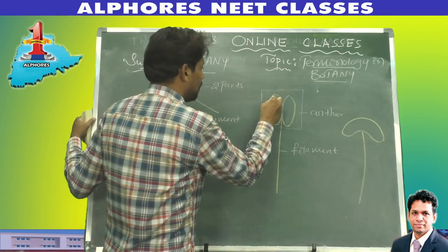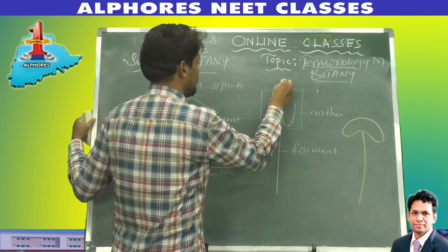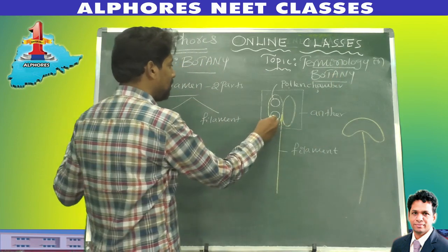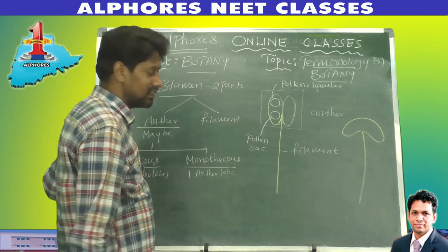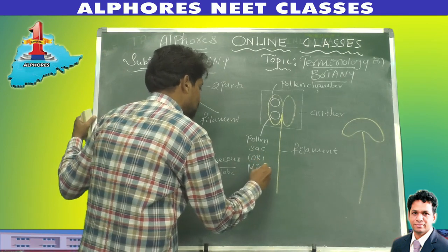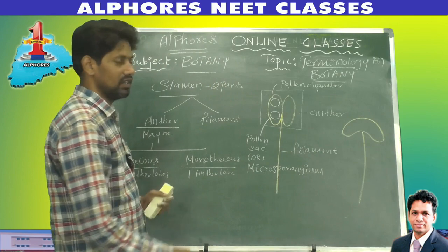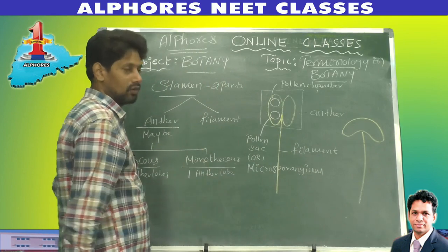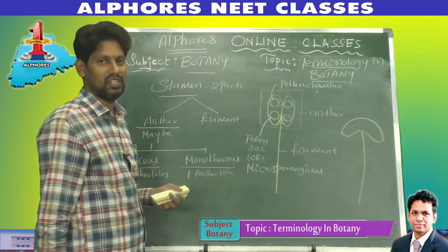If only one anther lobe is present, the anther is called a monothecous anther. A dithecous anther has two anther lobes, while a monothecous anther has one anther lobe. In each anther lobe, pollen chambers are present. Pollen chamber is also called pollen sac or microsporangium.